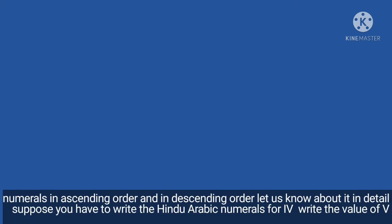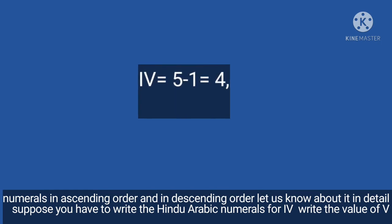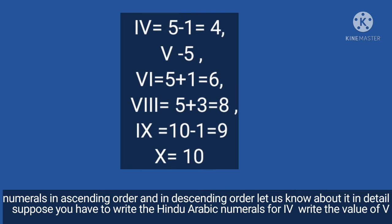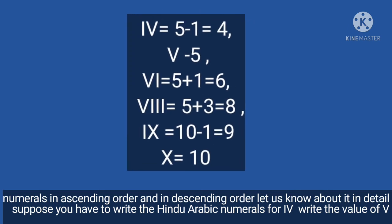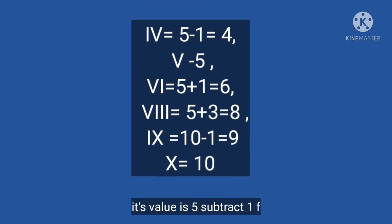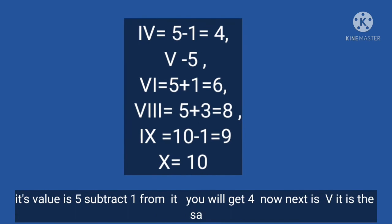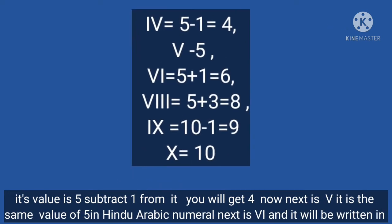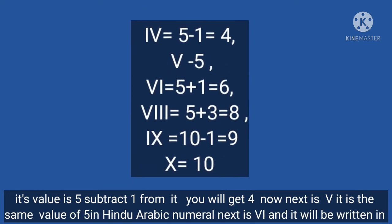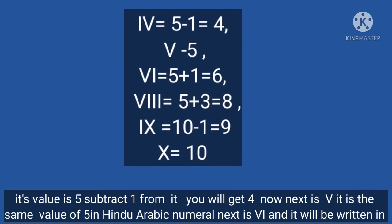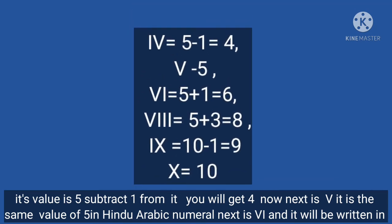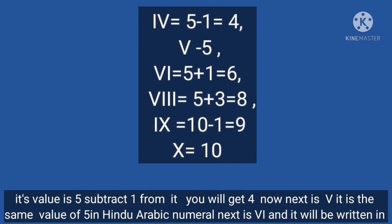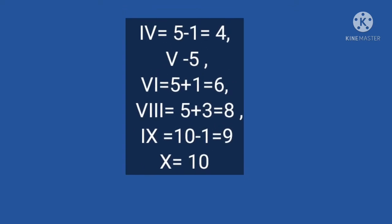Suppose you have to write the Hindu-Arabic numeral for IV. Write the value of V, which is 5, then subtract 1 from it — now you get 4. Next is V, whose value is 5 in Hindu-Arabic numeral. Next is VI, which will be written as 5 plus 1 equals 6 in Hindu-Arabic numeral.